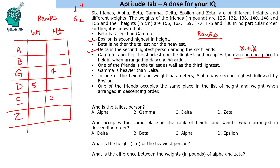One of the friends is the tallest as well as the third lightest. Tallest means rank 1 in height. Third lightest: lightest is rank 6, second lightest is rank 5, so third lightest is rank 4. So one person will have height rank 1 and weight rank 4.